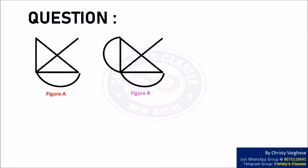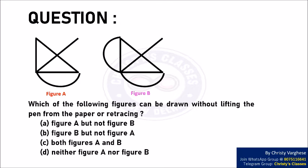Question. Given figure A and figure B, which of the following figures can be drawn without lifting the pen from the paper or retracing? Options: A. Figure A but not figure B. B. Figure B but not figure A. C. Both figures A and B. D. Neither figure A nor figure B.